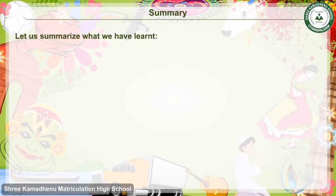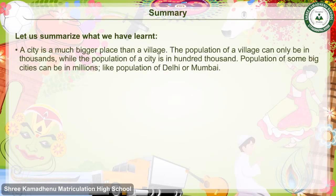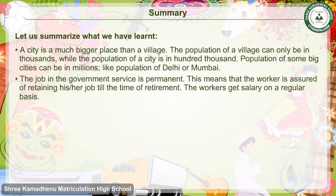Summary: A city is a much bigger place than a village. The population of a village can only be in thousands, while a city's population is in hundreds of thousands, and some big cities like Delhi or Mumbai have populations in the millions. Government service jobs are permanent, workers are assured of retaining their jobs until retirement, and they receive a regular salary.